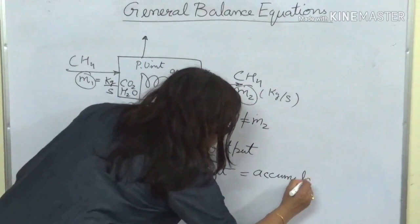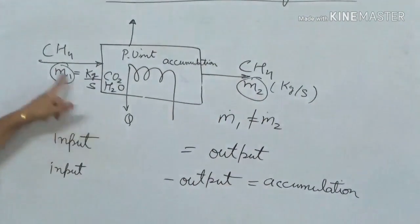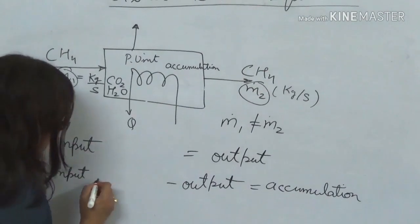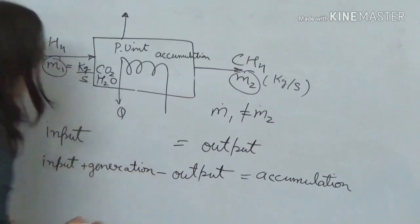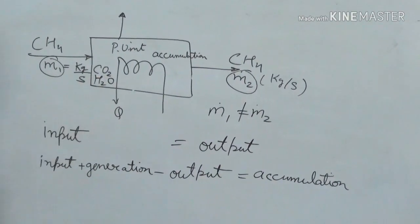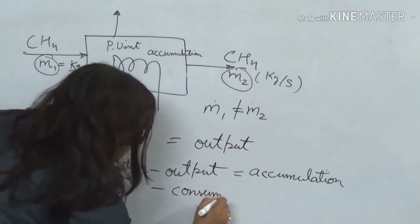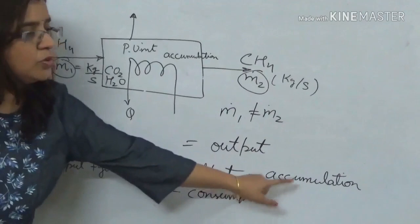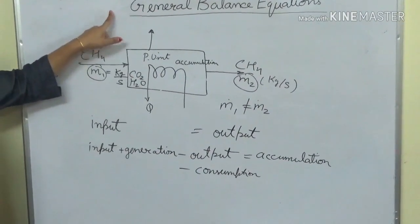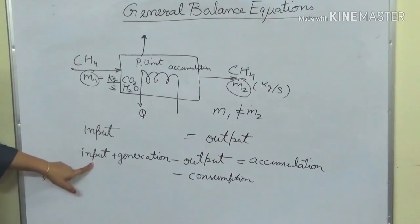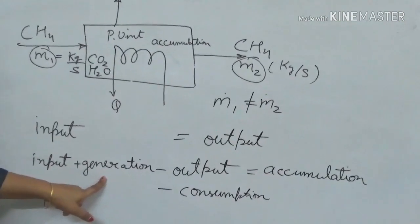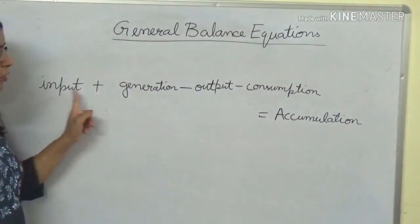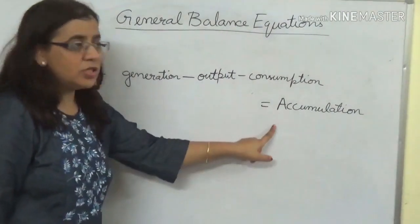A reaction can also take place where methane is generated or consumed. If it is generated, you have input plus generation minus output. If it is being consumed — say decomposing to CO₂ — then you subtract consumption. So the general balance equation becomes: input + generation − output − consumption = accumulation. This applies equally to energy: energy input − energy output + energy generated − energy consumed = energy accumulation within the system.